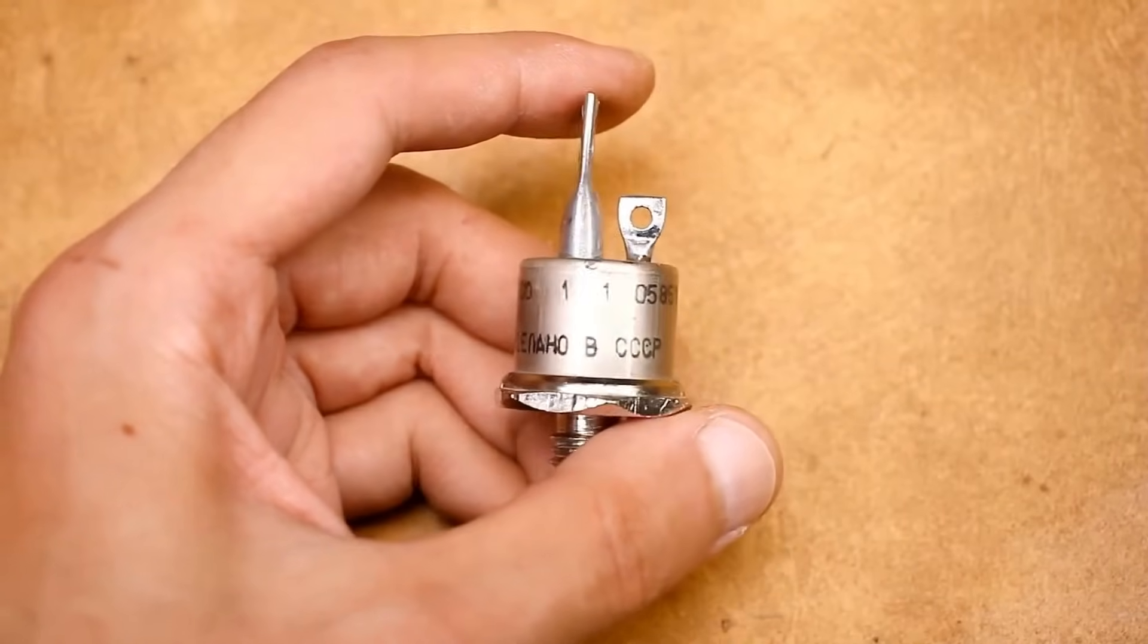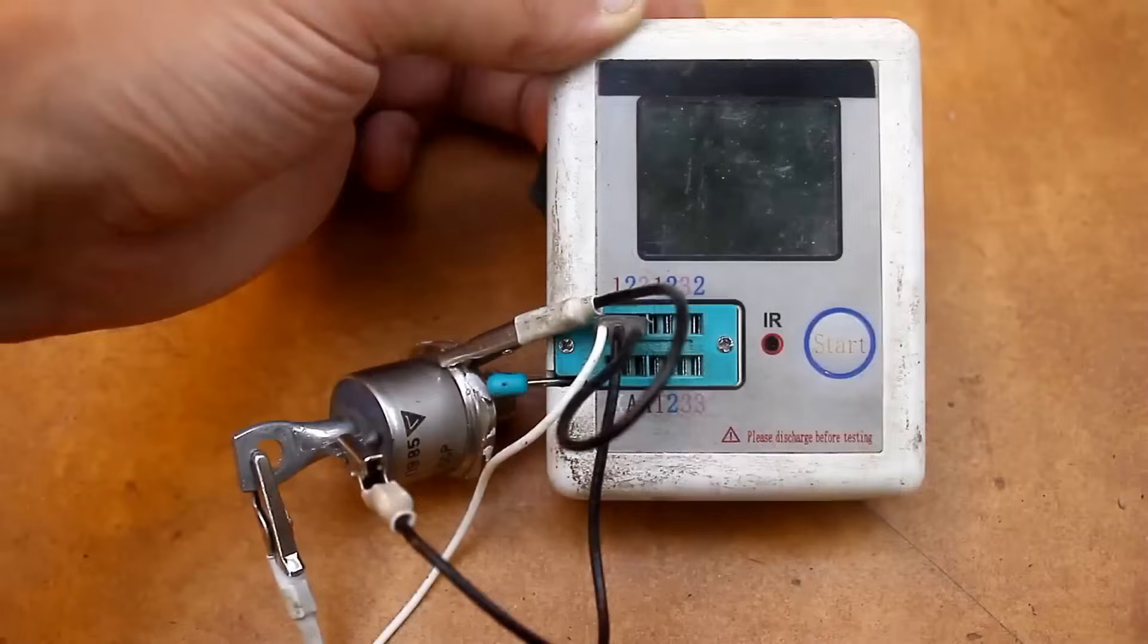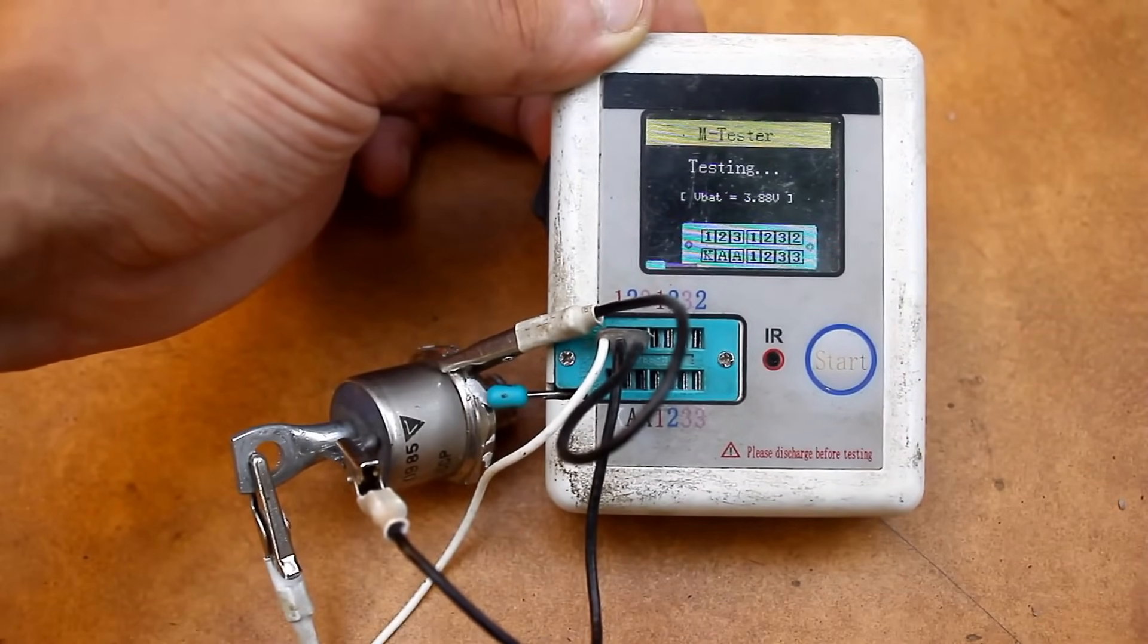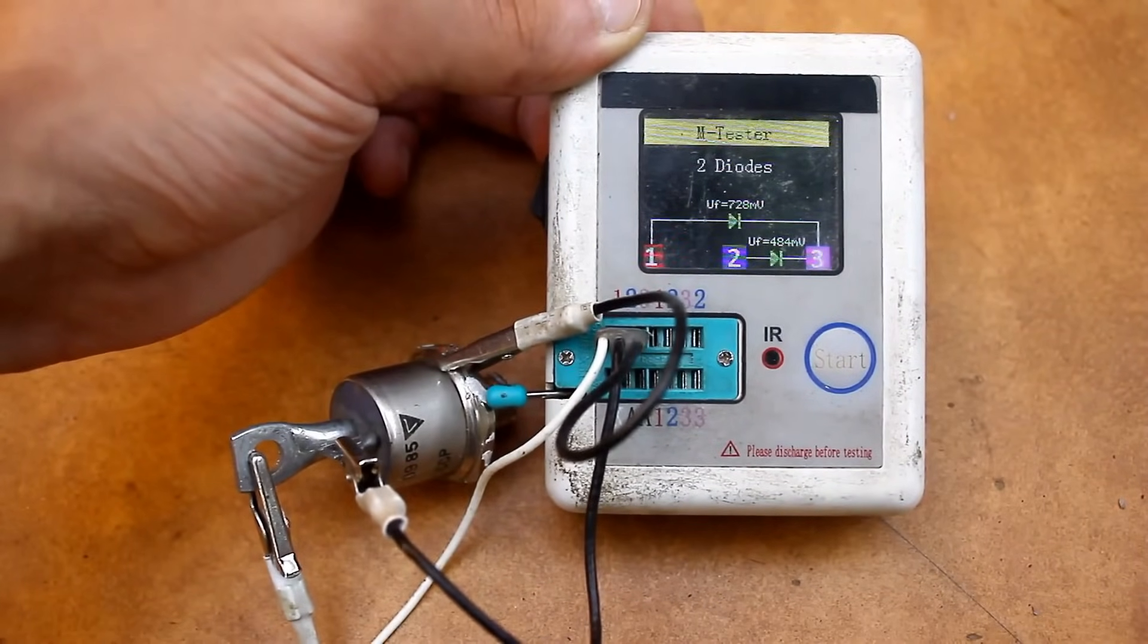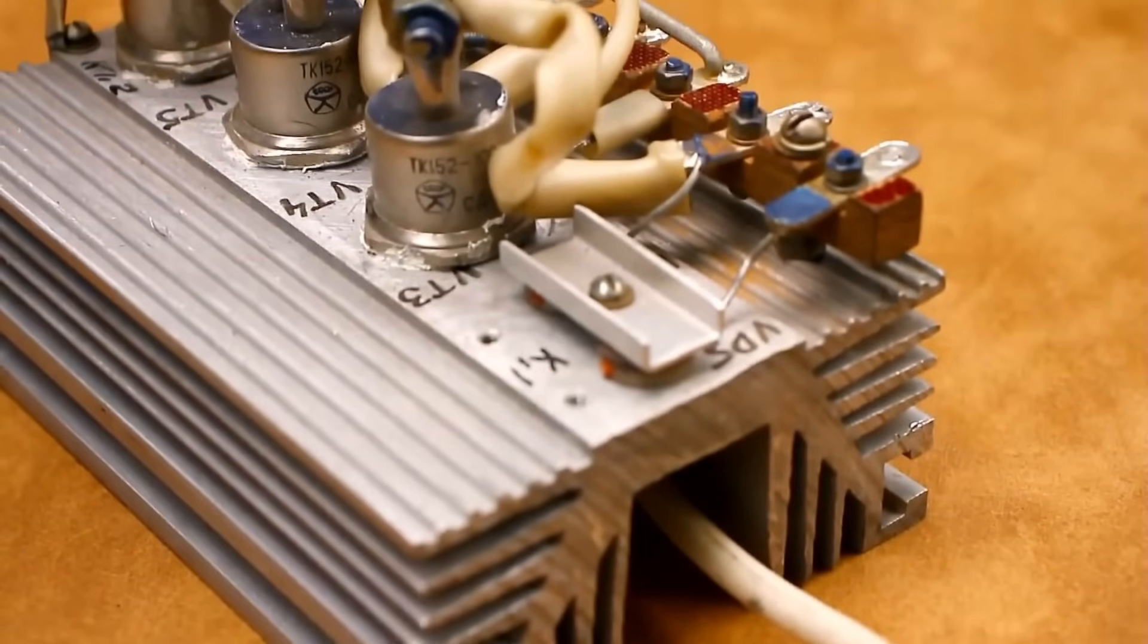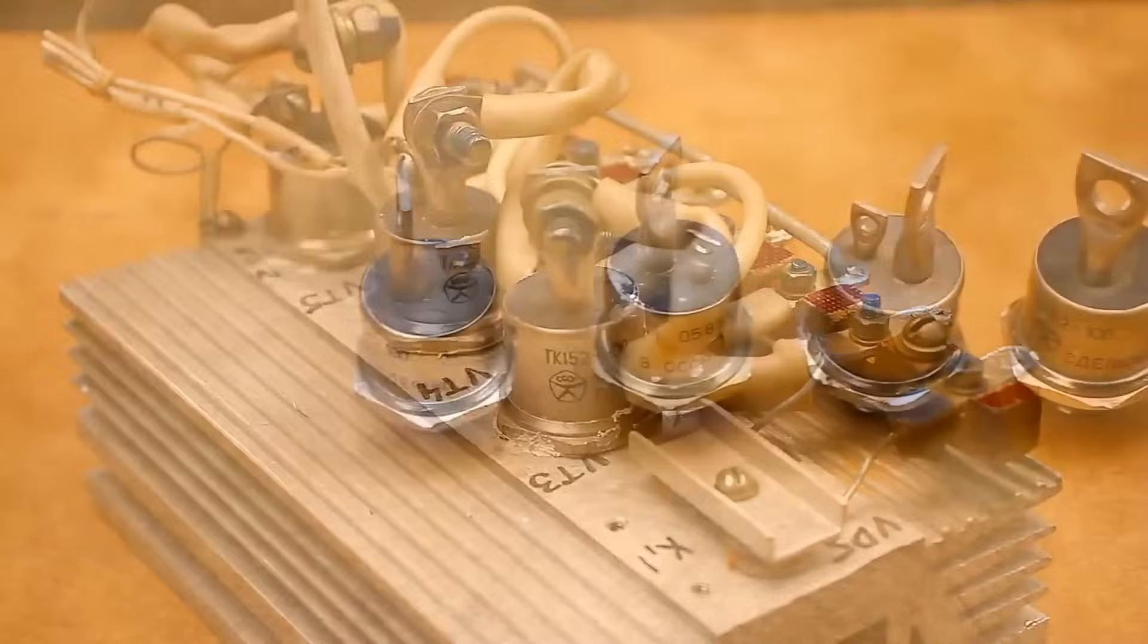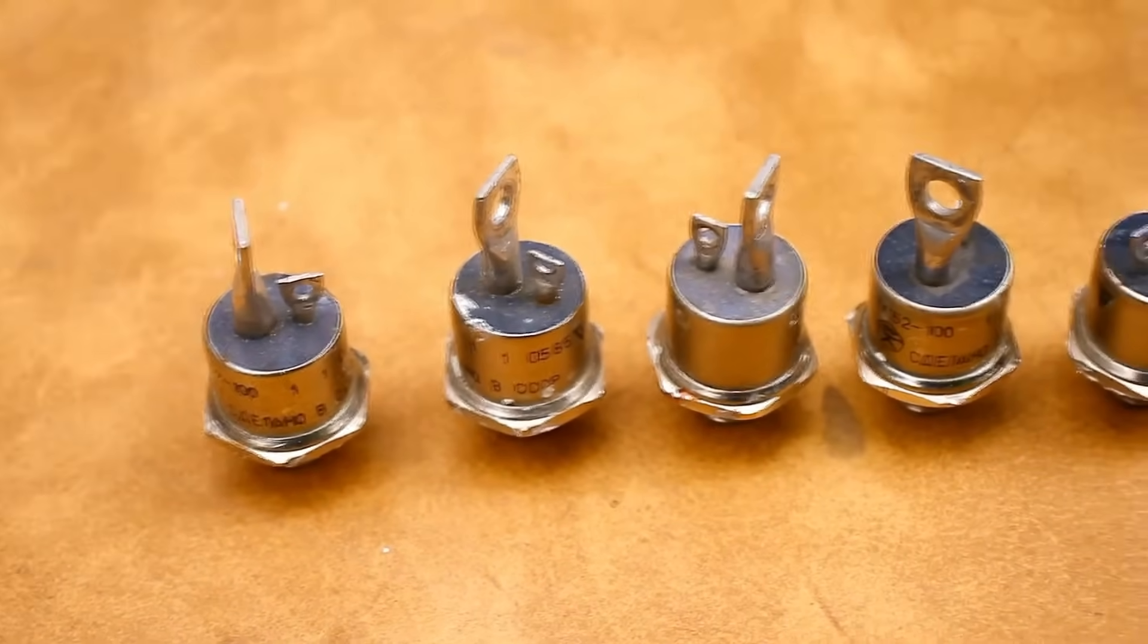Regarding my transistors, they are very robust. So robust that even a transistor tester doesn't recognize them. Such powerful transistors typically have very low gain. According to the specifications, from 8 to 100. But most likely closer to 8, considering that we know well how Soviet transistors were made and their variability.